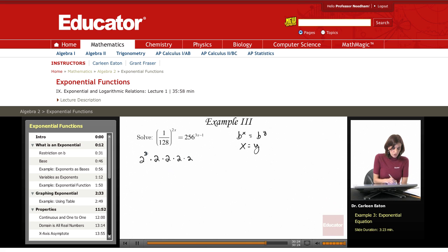So 2 to the 3rd, 4th, 5th, 6th, 7th equals 128. If 2 to the 7th is 128, then 2 to the negative 7th equals 1 over 128.